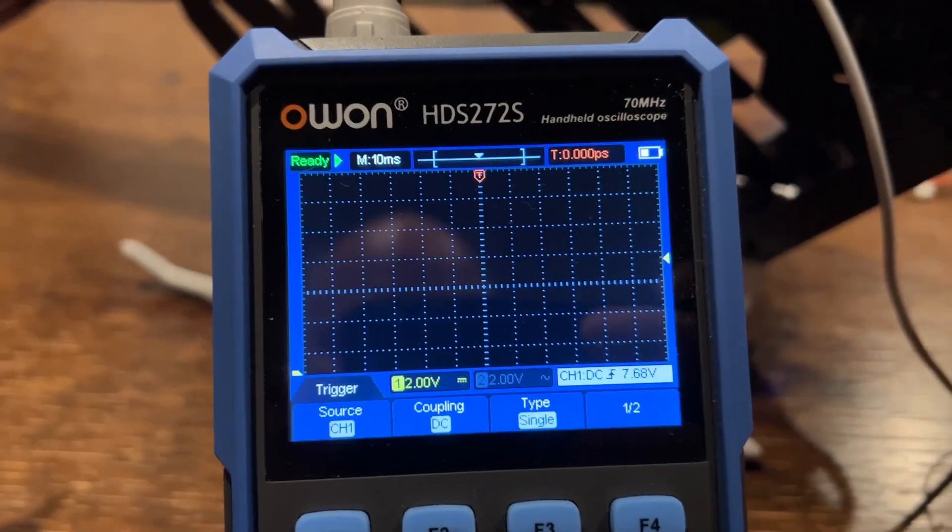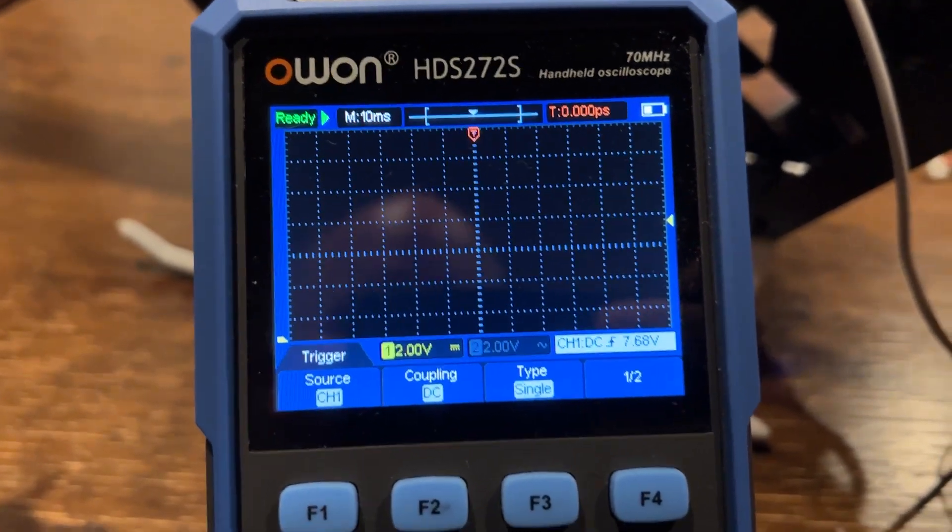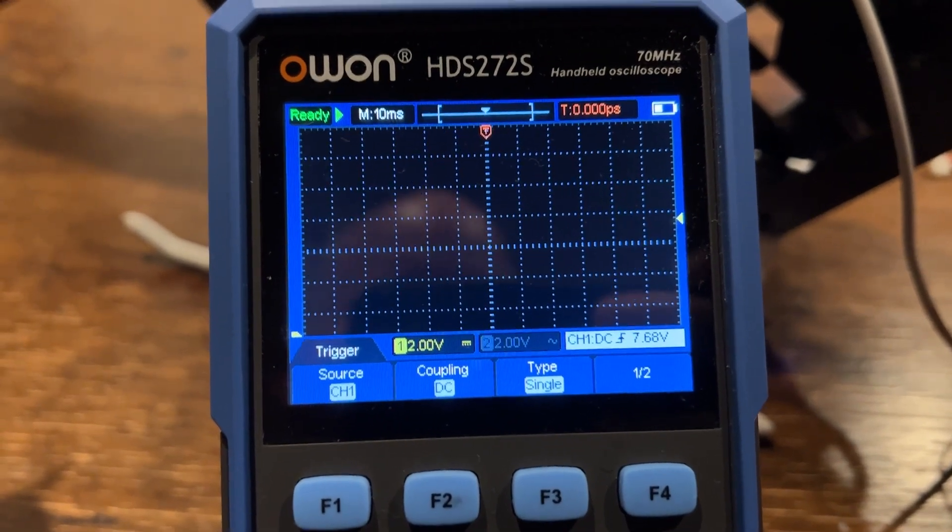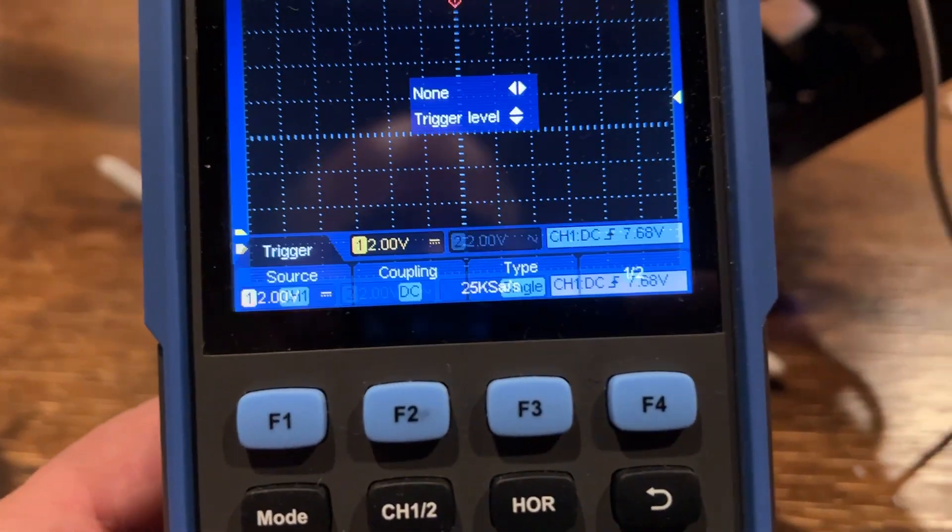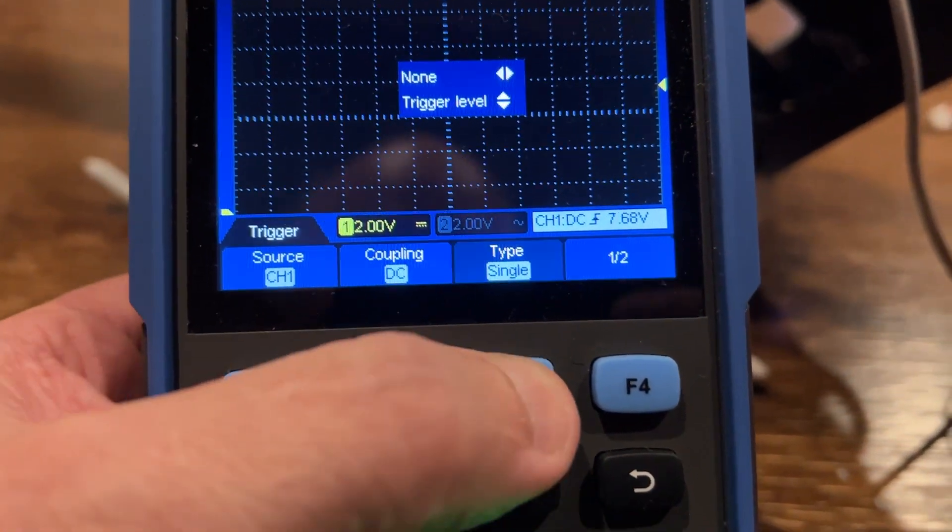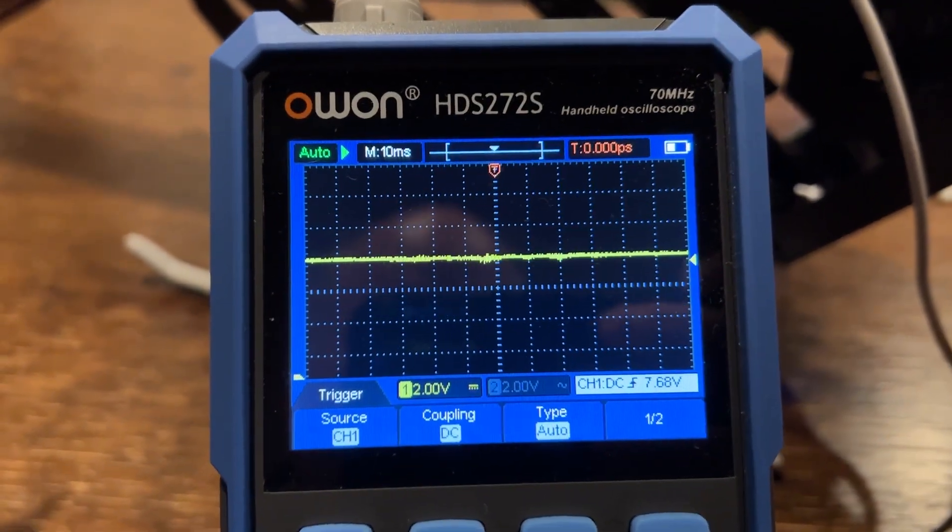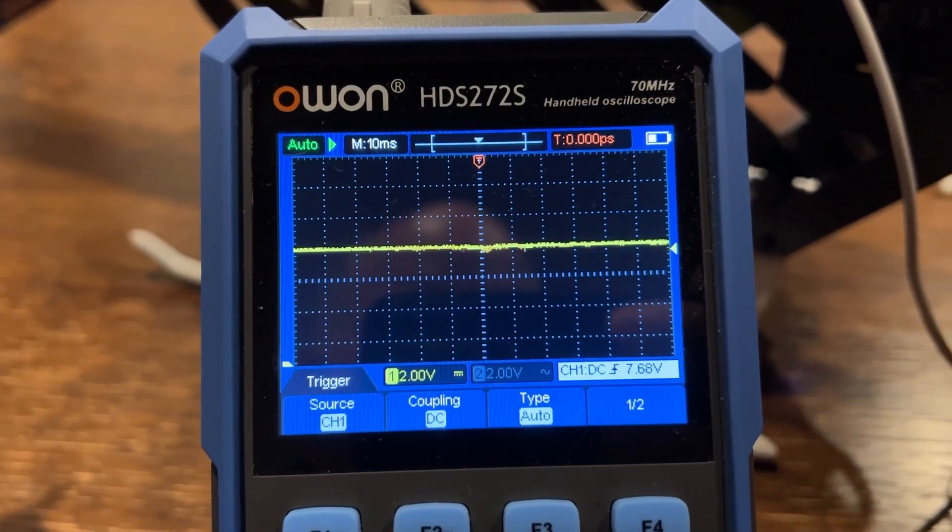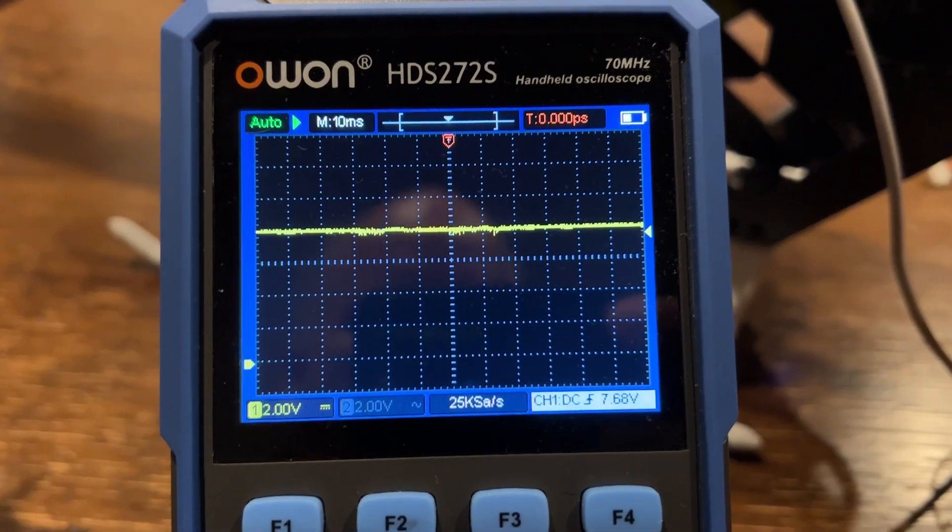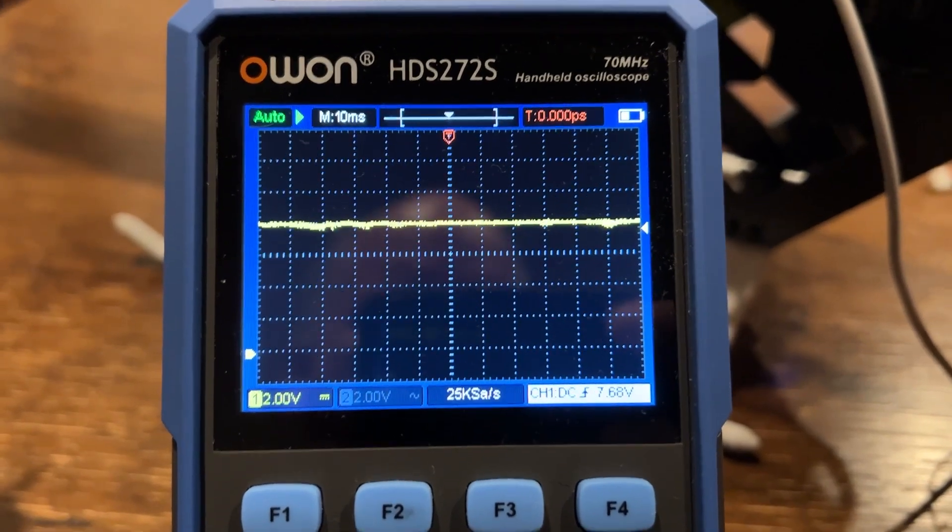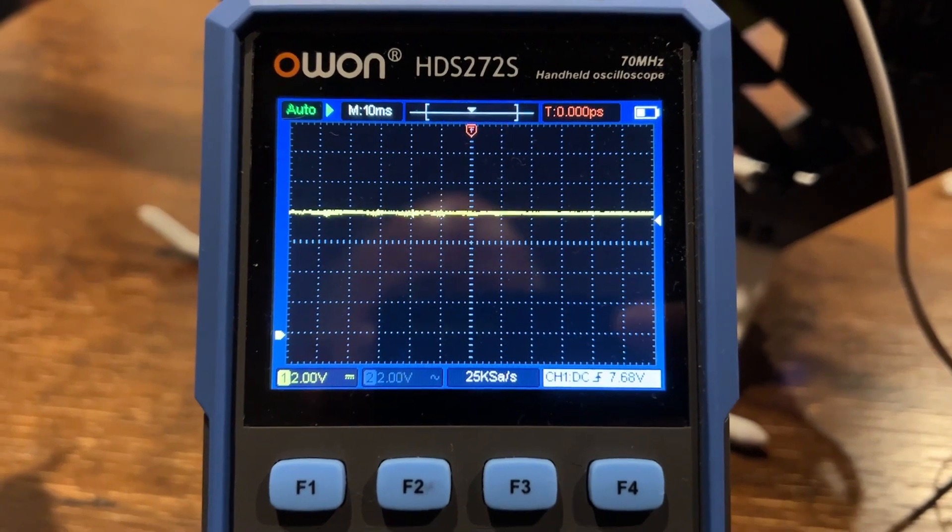Put the trigger again in single and we apply the signal, it will not capture it because it doesn't drop below the triggering point. So it will drop only a few millivolts, and to be able to see it, because we cannot capture it, we could put it on auto so we can see. See, there's barely any distortion from the voltage.